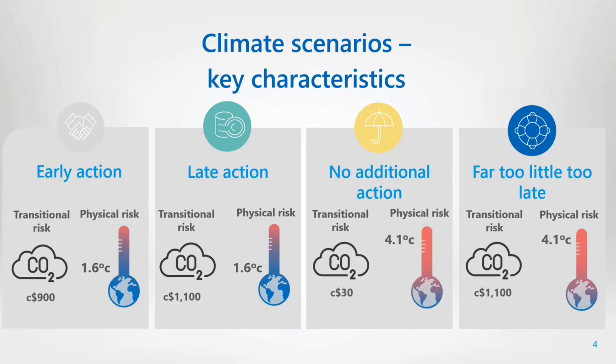Finally, a far too little too late scenario combines a late action and a no additional action scenario. It assumes that due to action being delayed or late by policy makers — including a higher global carbon price — policy is ultimately futile, and therefore significant temperature rises still occur by the end of the century, resulting in a high level of both transition and physical risk.